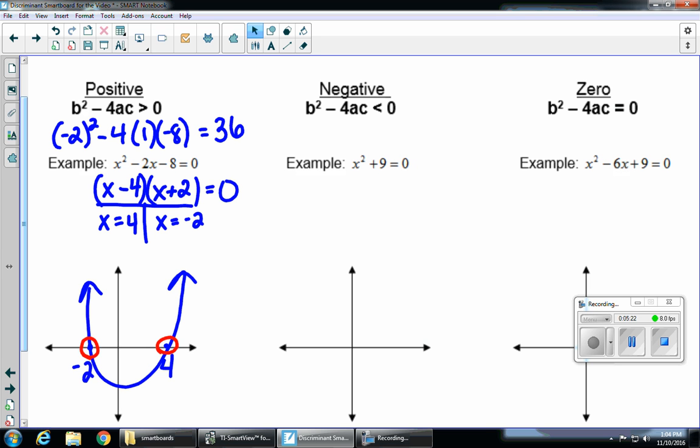So let's look at our next case, if I have a negative discriminant. So if I have the example, x squared plus 9 equals 0, there's no b value. It's 0, because there's no x. Minus 4 times 1 times c, which is 9.